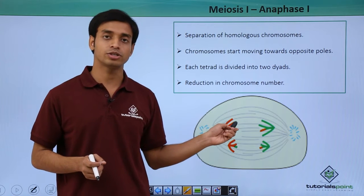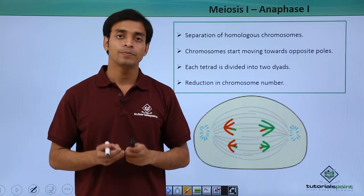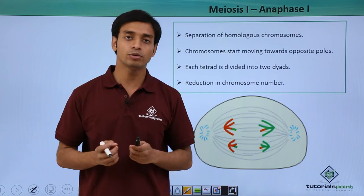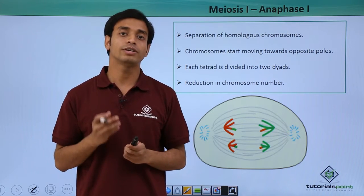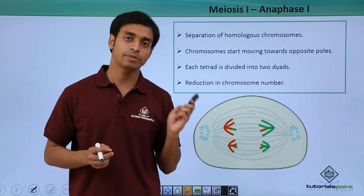Why this happens? Because initially the chromosomes were attached at the centromere position by the spindle fibers. Now due to the process of depolymerization of these spindle fibers, what happens they start pulling these chromosomes towards the opposite poles.